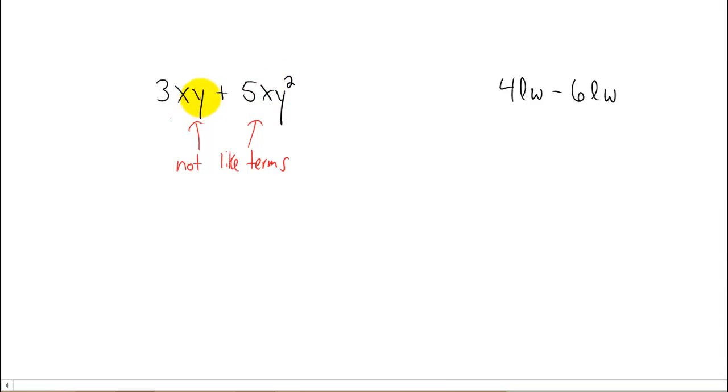In the first term, y has a power of 1. And in the second term, y has a power of 2. So they're not like terms, and you can't combine them. However, 4LW minus 6LW. Now those two terms are like terms. They have the same variables, L and W, and the same powers on those variables.